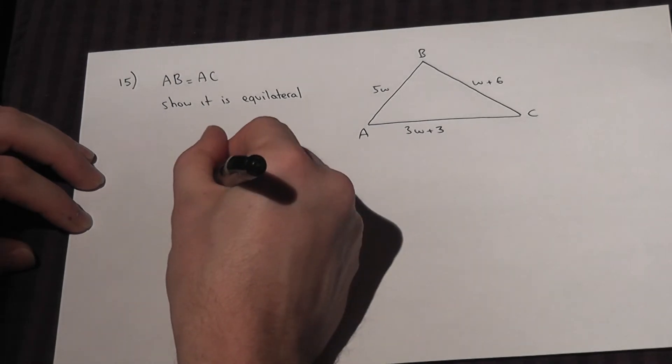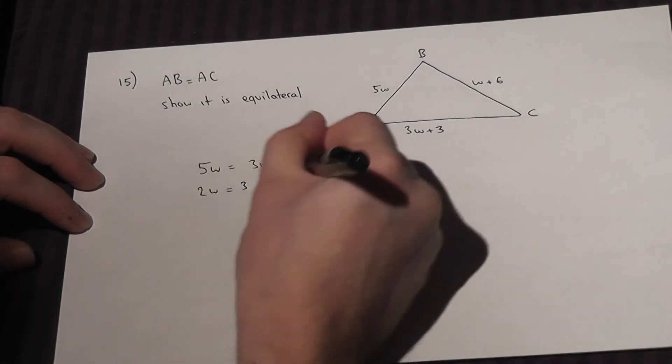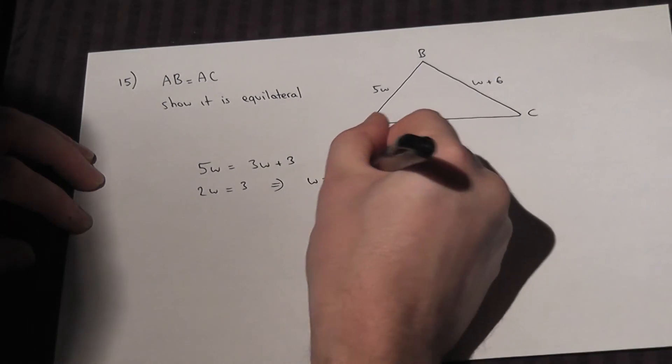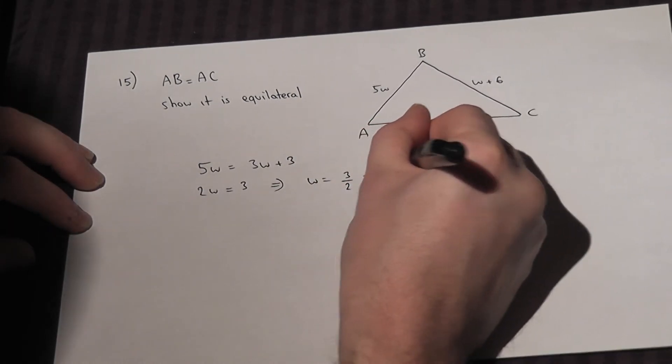Take away 3W, 2W equals 3. So therefore W is equal to 3 over 2, which equals 1.5.